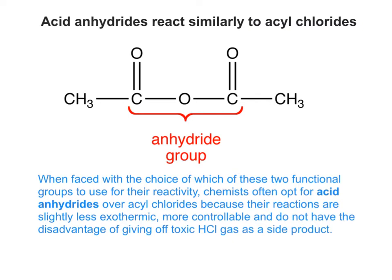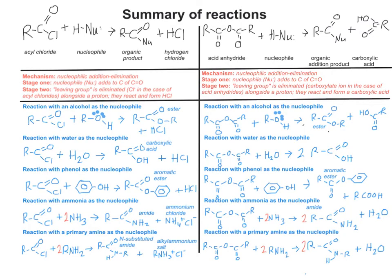The acid anhydride group is very reactive, but not quite as reactive as the acyl chloride group. In the acyl chloride group's reactions, it almost invariably gives off toxic HCl gas as a side product, so it's not only more exothermic and difficult to control, but it also has a dangerous side product. On an industrial scale and in professional laboratories, chemists will often use acid anhydrides instead because they're slightly safer and easier to work with.